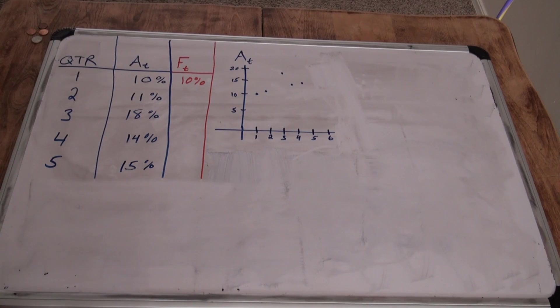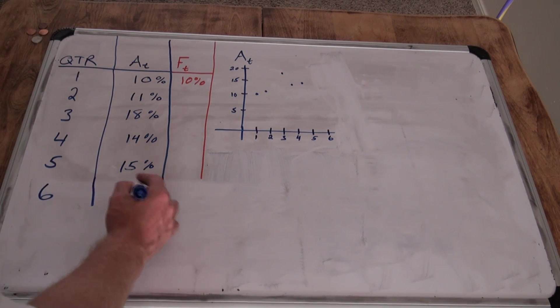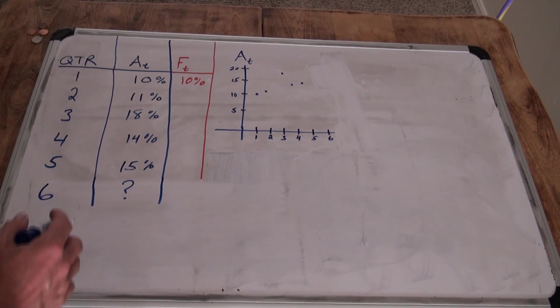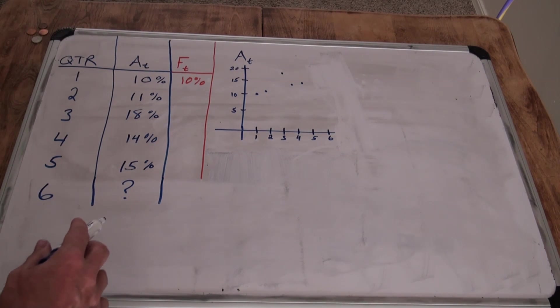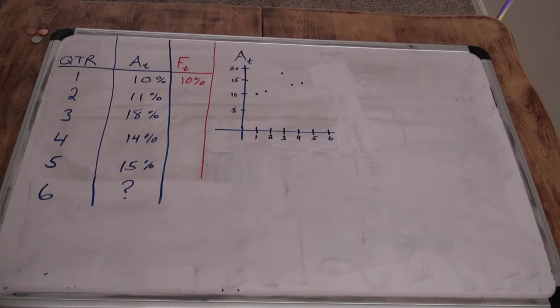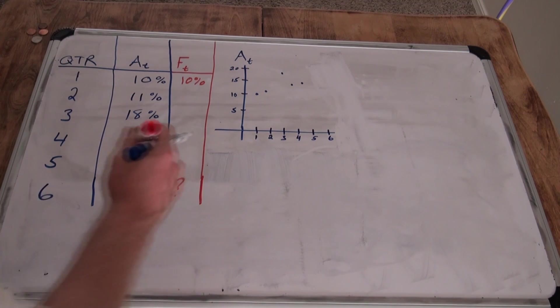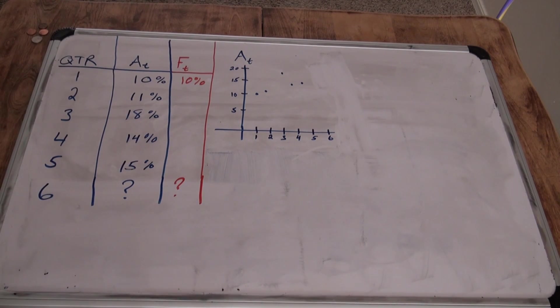What I'm going to show here is the difference between an average, a moving average, and exponential smoothing forecast to predict the 6th quarter of this graph. We don't know what the actual is for the 6th quarter, but we can forecast it.